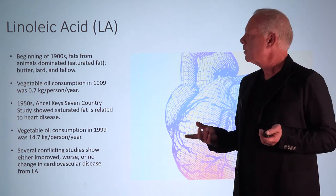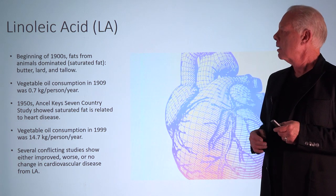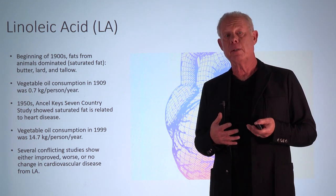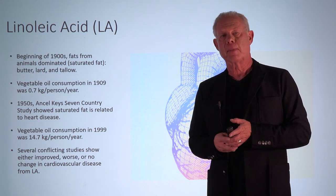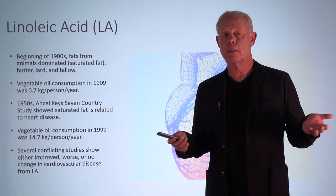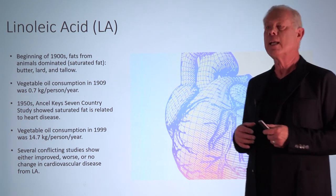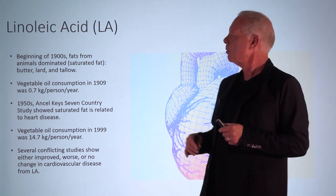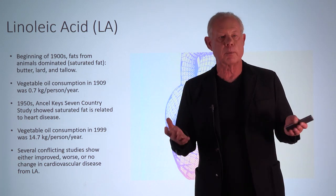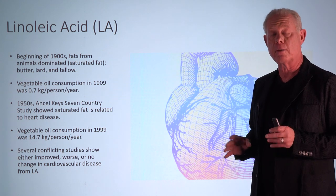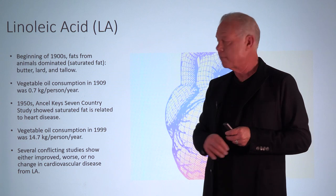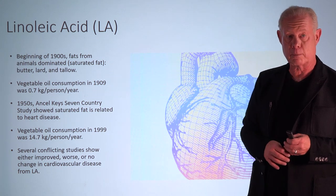In the early 1900s, the predominant form of fat we used was saturated fat from animals — lard, tallow, butter, fatty creams. We had very little vegetable oil consumption, maybe 0.7 kilograms per person. By 1999, we saw a big increase, reaching 14.7 kilograms per person per year.